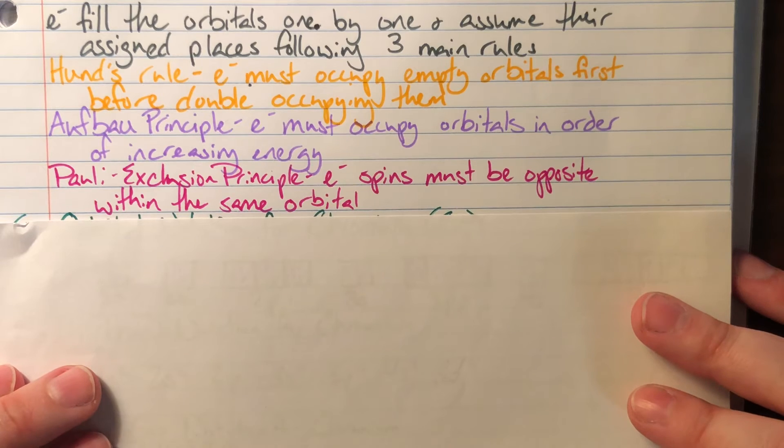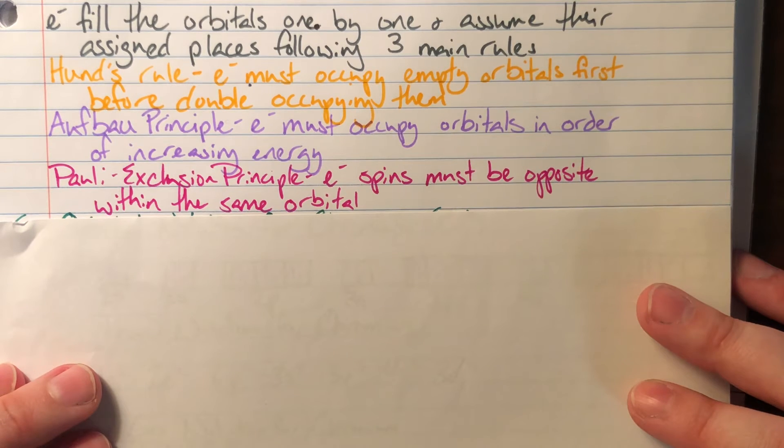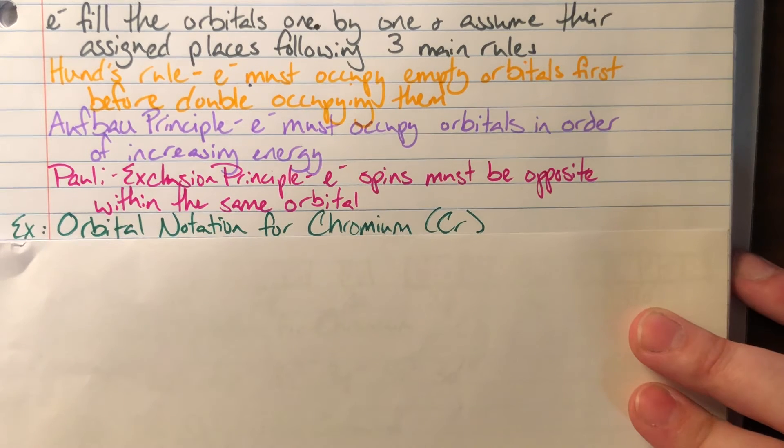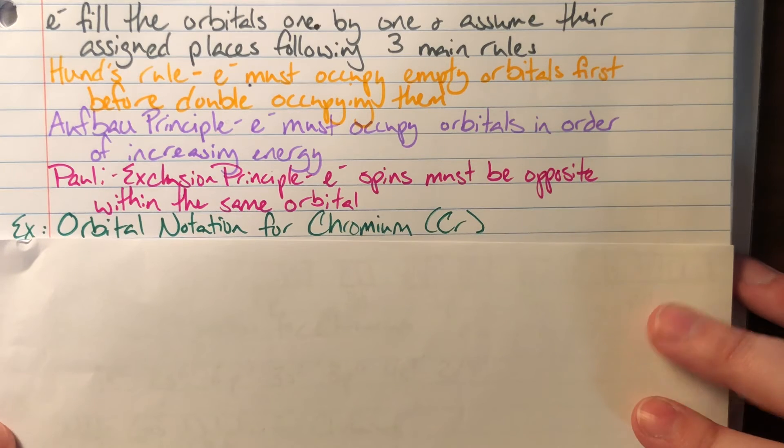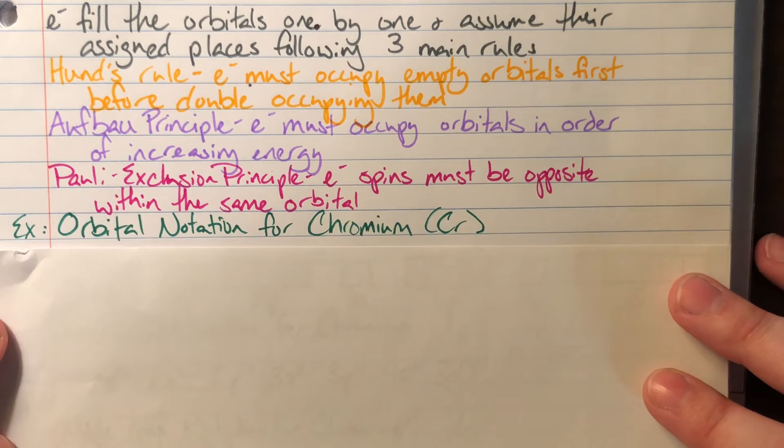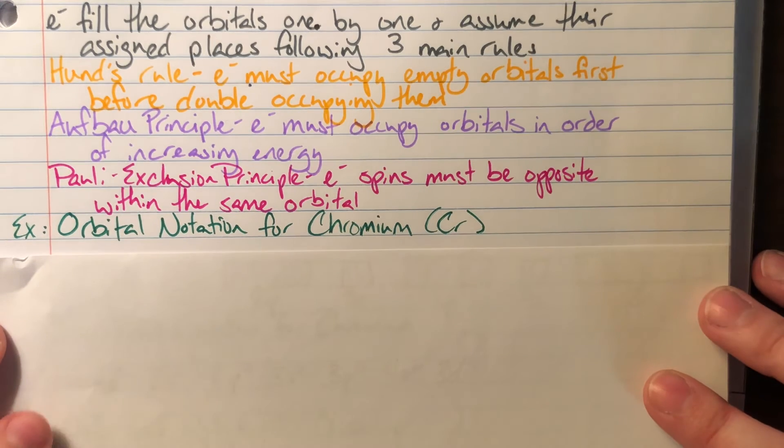We're going to actually look at the three different notations for electron configurations now. The first is called orbital notation. This is the most time-intensive electron configuration, but it is the one that reveals the most amount of information. It's actually the most useful when we are predicting what is actually going to happen to those electrons and how an element is going to respond in a bonding situation. But it is the most complex.